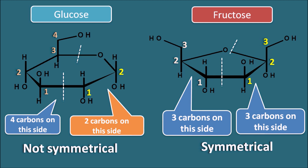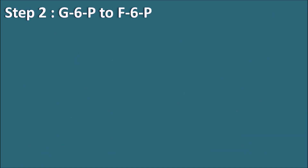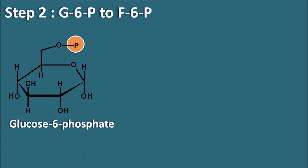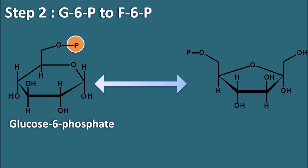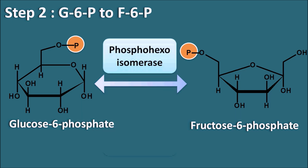As already noted, glucose must be converted into a symmetrical molecule before splitting. So glucose as-is cannot proceed directly in glycolysis — it must first be converted into a symmetrical molecule like fructose. Step 2 is the conversion of glucose-6-phosphate to fructose-6-phosphate. This is an isomerization reaction, so the enzyme involved is phosphohexoisomerase.